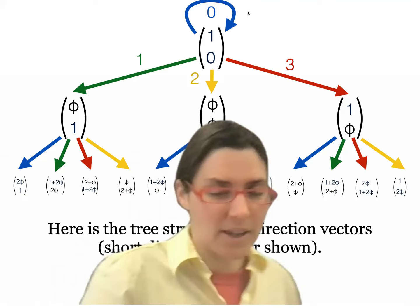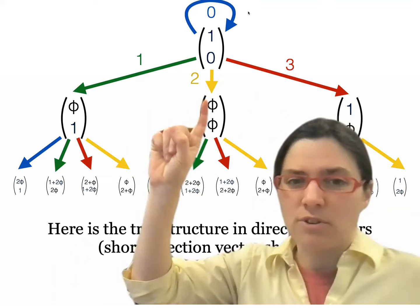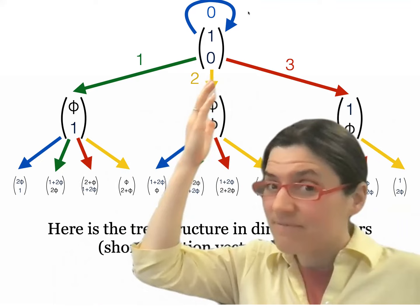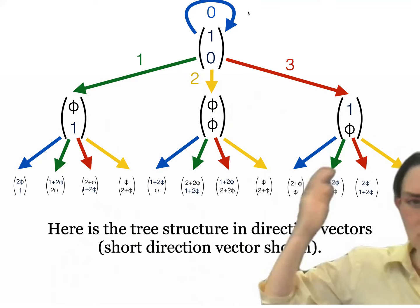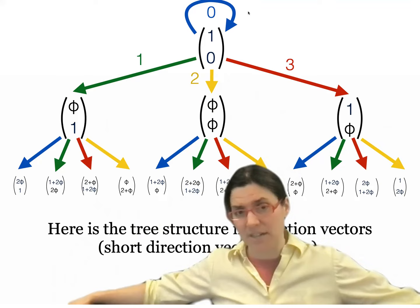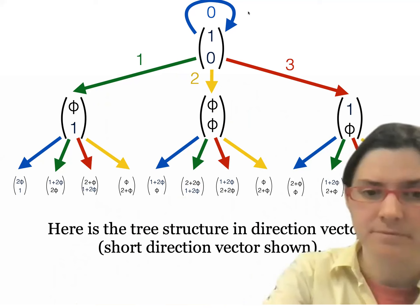Let's do a little work. We start with the simplest direction, the horizontal direction (1,0), and apply our four different transformations. The horizontal shear of a horizontal vector just stays where it is, but the others get us somewhere new. We apply the next transformations, getting further points. This gives an infinite quaternary tree of periodic directions, similar to our infinite binary tree of rational numbers.